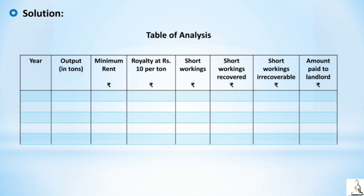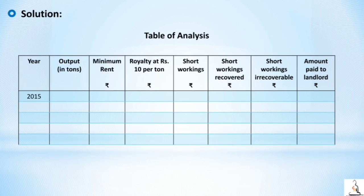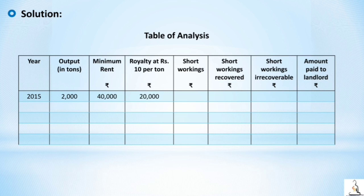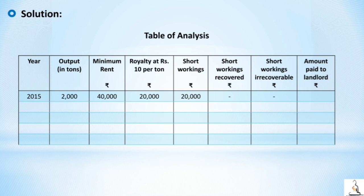We need the same 8 columns: year, output, minimum rent, royalty, short working, short working recovered, short working irrecoverable, and amount paid to landlord. In 2015, output is 2000 tons, minimum rent is 40,000, and royalty is 2000 × 10 = 20,000. Royalty is less than minimum rent, so there is a short working of 20,000. Short working recovered and irrecoverable are nil. Amount paid to landlord is 40,000.